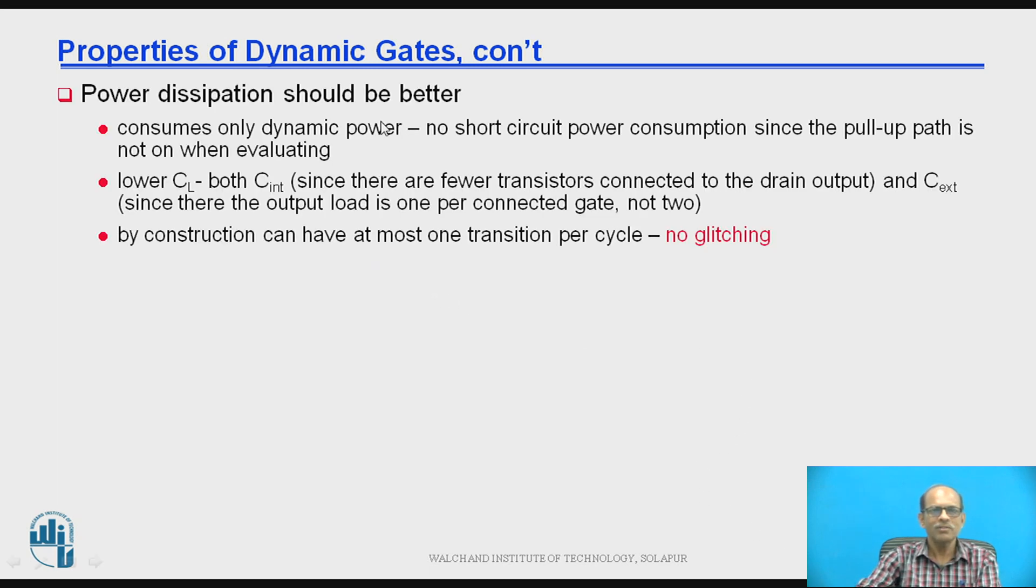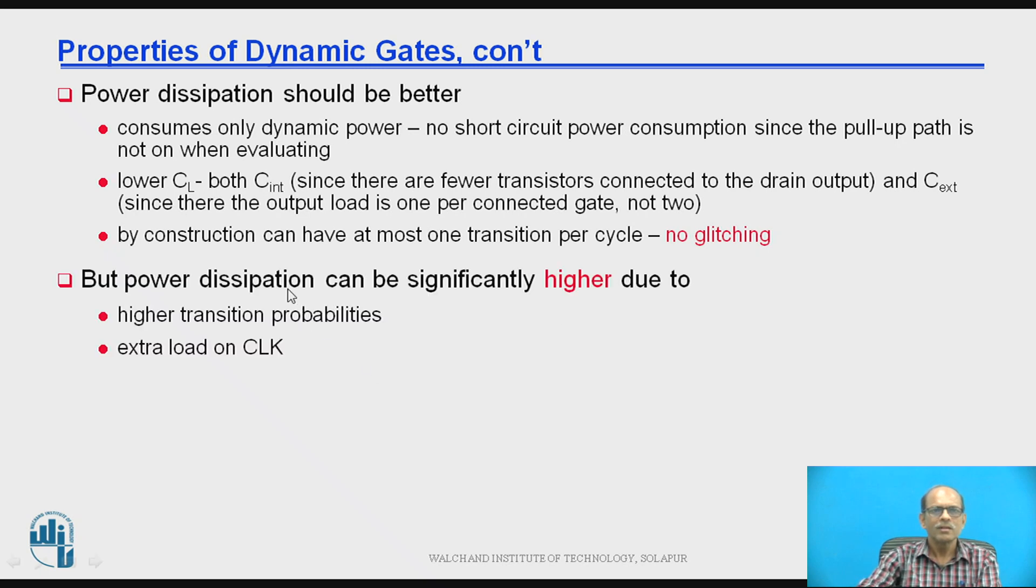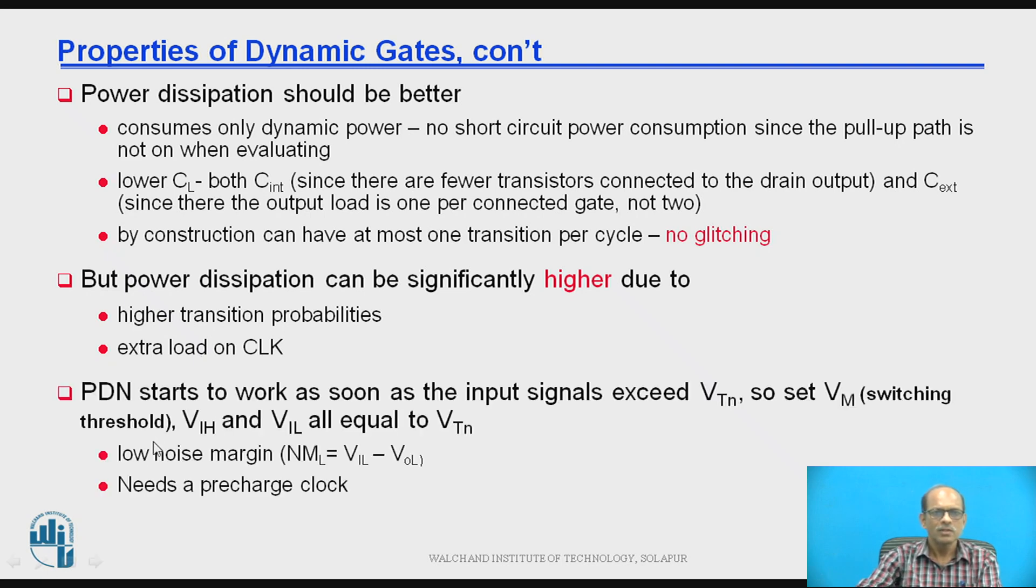Now next property is power dissipation should be better because it consumes only dynamic power. No short circuit power since the pull-up path is not on during the evaluation phase. By construction can have at the most one transition per cycle. But power dissipation can be significantly higher due to higher transmission probabilities and extra load on the clock.